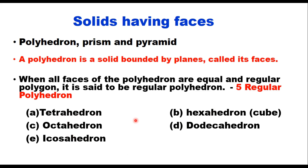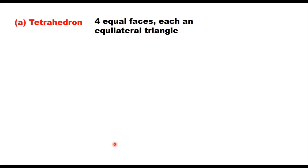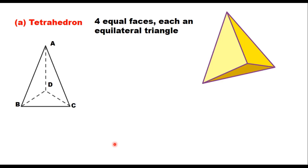Polyhedra can be tetrahedron, hexahedron, octahedron, dodecahedron, and icosahedron. 'Tetra' means 4, 'hexa' means 6, 'octa' means 8, 'dodeca' means 12, and 'icosa' means 20 faces. A tetrahedron has 4 equal faces, each face being an equilateral triangle — for example, solid ABCD has 4 equilateral triangles, one at the back side.